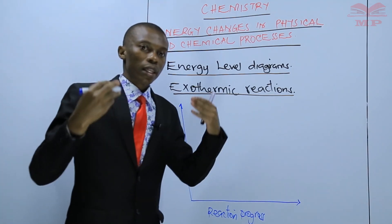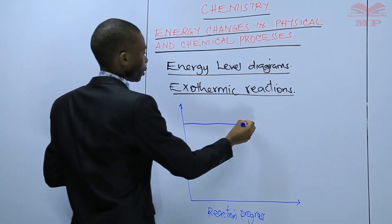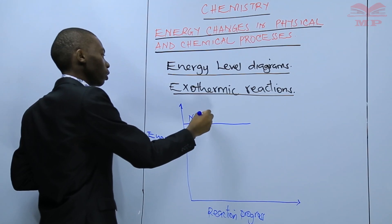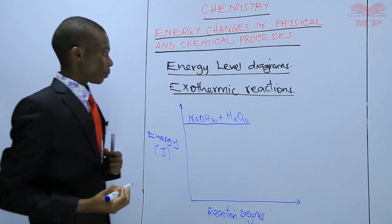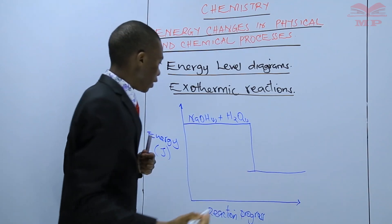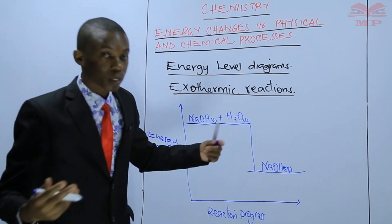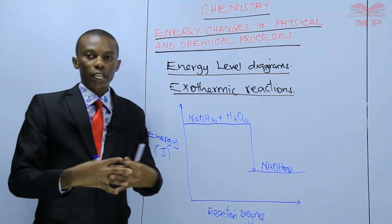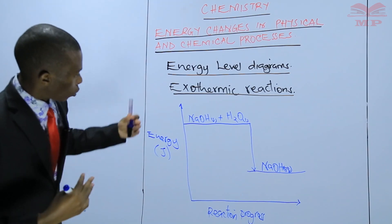Our reactants in this case are sodium hydroxide — sodium hydroxide solid — dissolved in water, which is a liquid. So the amount of energy in the reactants is higher. At the end of the experiment, you have sodium hydroxide solution, which is aqueous. After you mix sodium hydroxide solid and water, you get sodium hydroxide solution.